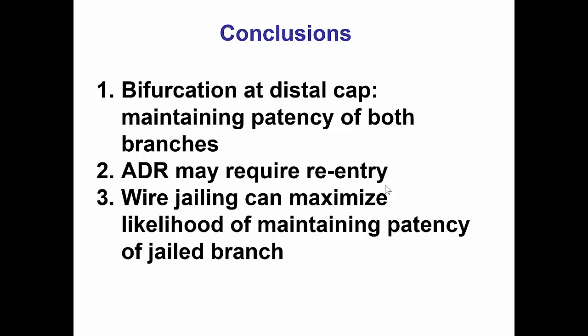However, to re-canalize the large obtuse marginal branch, Stingray-based reentry was required. And finally, when there is bifurcation stenting, jailing the wire of the side branch — especially when dissection-oriented techniques are used, as in this case — can maximize the likelihood of maintaining patency of the jailed branch, because if there is a problem, there is access to the vessel facilitating rewiring or performance of balloon inflations. Thank you very much.